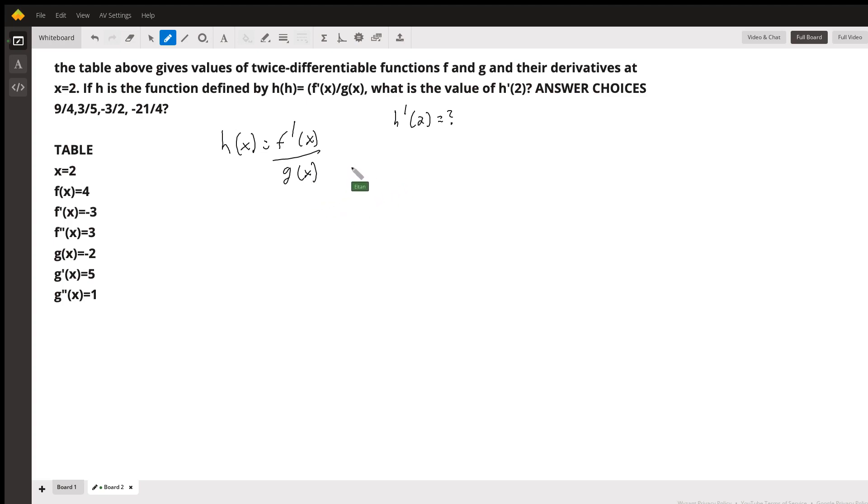So the quotient rule can be remembered with this fun phrase, low d high minus high d low, underneath the square must go. And I'll show you what that means right now.